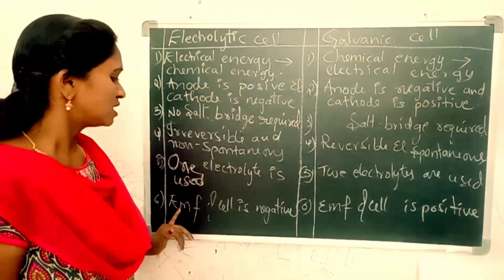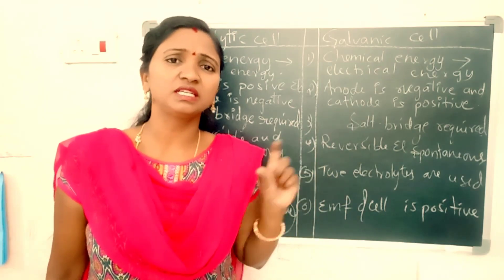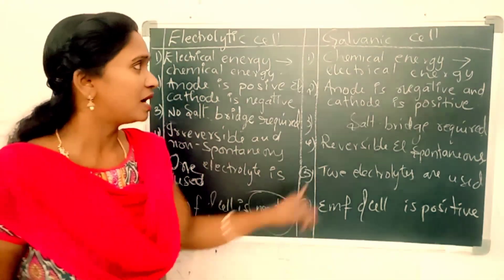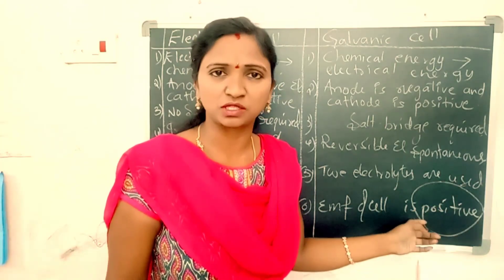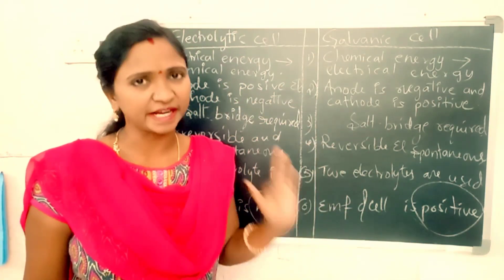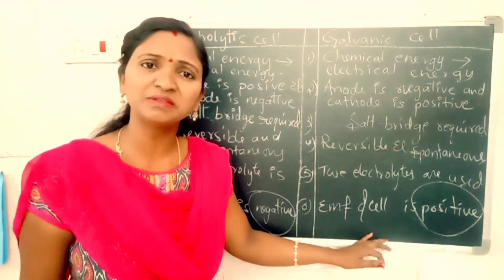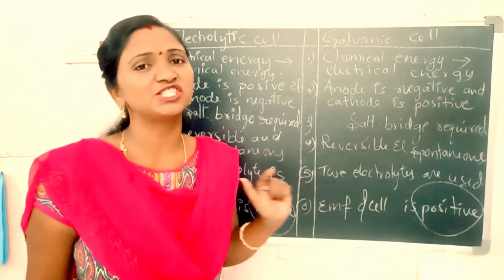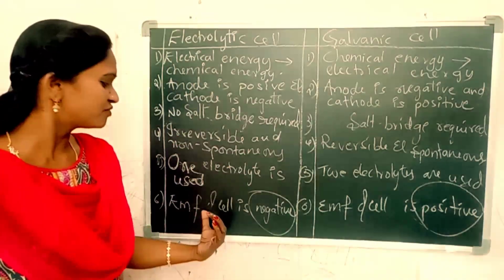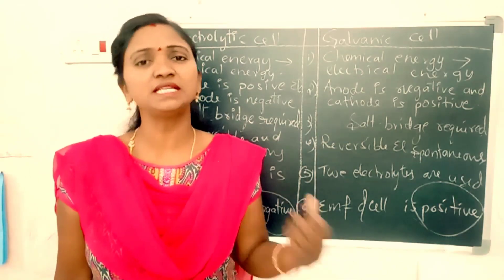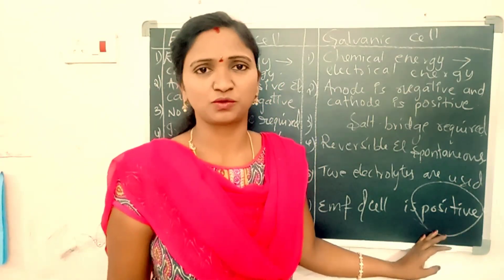The sixth difference: the EMF — electromotive force — of an electrolytic cell is always negative. But the EMF of a galvanic cell is always positive. If the EMF of a galvanic cell is negative, then the cell is not working.